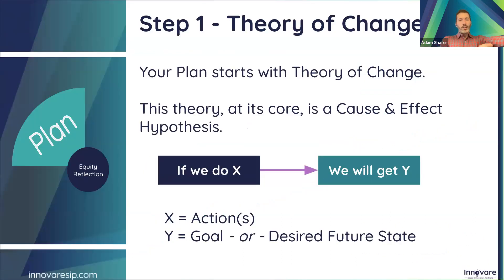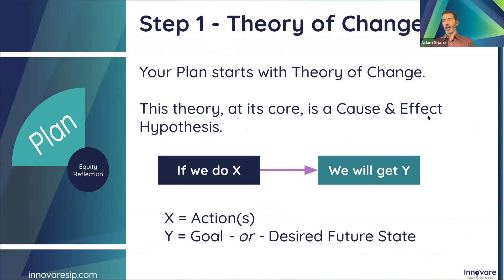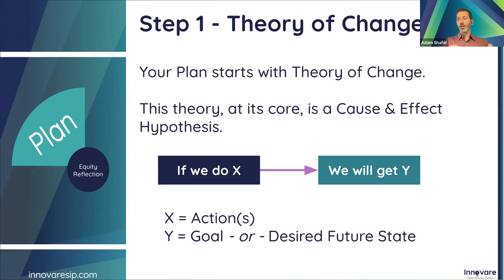The first step in the PDSA cycle is planning, and your plan has to start with your theory of change. You have to understand what you want to change and have a theory of how you'll do it. That theory is a cause-and-effect hypothesis — if we do X, then we're going to get Y. For example: if we work out three times a week for 60 minutes each time, then we'll get 1% less body fat. Those are your actions and your desired future state. This is what the PDSA is built on.